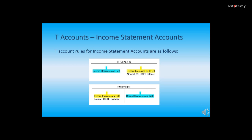Now it's time to add income statement accounts to the mix. T-Account rules for income statement accounts are as follows: For revenues, you record increases on the right and revenue accounts have a normal credit balance. For expenses, you record increases on the left and expenses have a normal debit balance. As we go through these exercises, it's a good idea to have the first two pages of your handout handy as well as the chart of accounts handout in the introductory module.